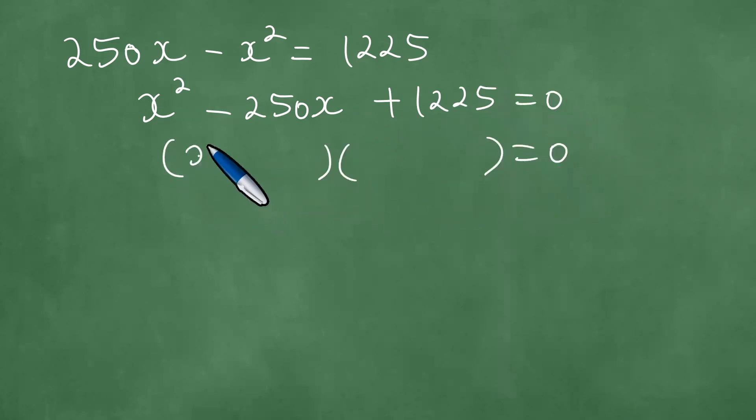Factoring x squared: we have here minus 5 and minus 245. And this is x equals 5 or x equals 245. And that is what we get.